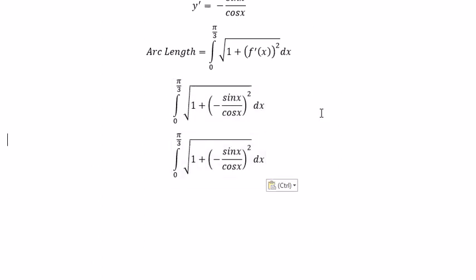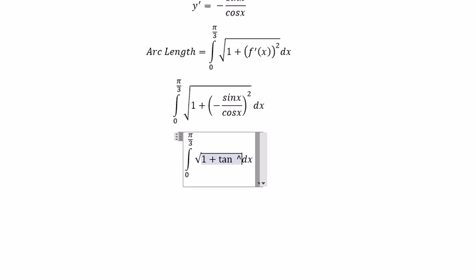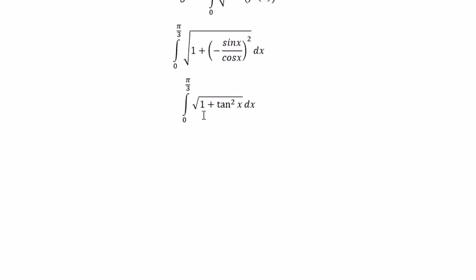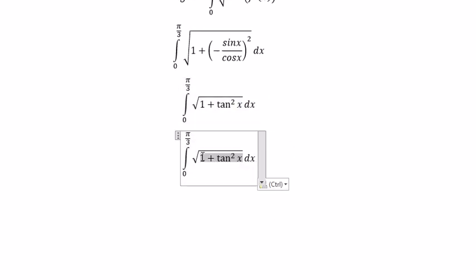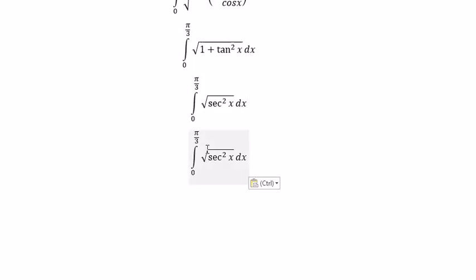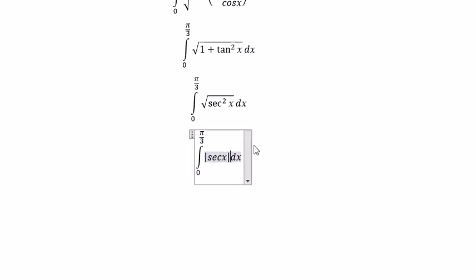Inside the square root, we get tan²x. We can change this using a trig identity to sec²x. Taking the square root gives us the absolute value of sec x.